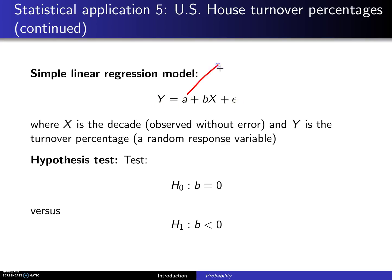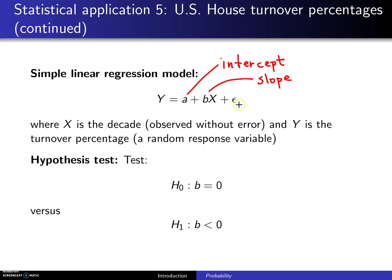This A term will be the intercept for the regression line, and B will be the slope of the regression line. X is often known as an independent variable, Y is known as a dependent variable, and epsilon is known as an error term.